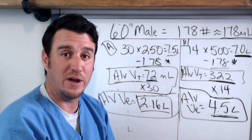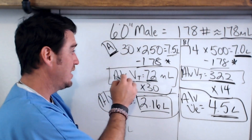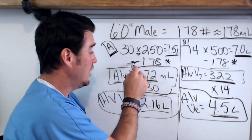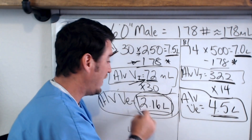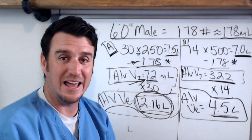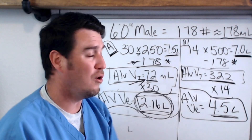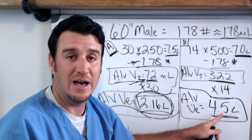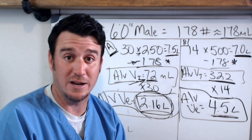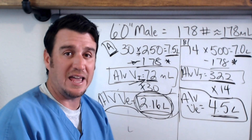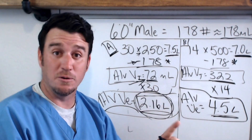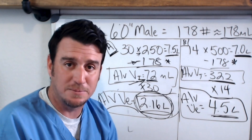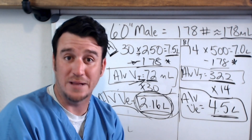Comparing those numbers, Patient B — who has a smaller total minute ventilation of 7 liters — actually has a more effective alveolar minute ventilation of 4.5 liters versus Patient A's 2.16 liters. Patient A had a higher minute ventilation, but their tidal volume was so small that most of it was lost in dead space, leaving very little effective ventilation. Patient B is removing more CO2 because more of their total minute volume is actually participating in gas exchange.